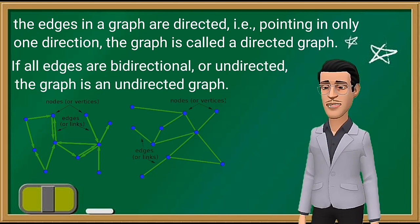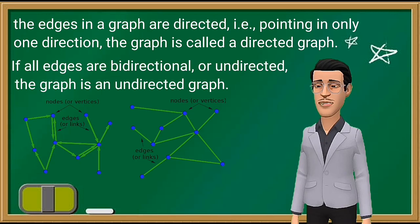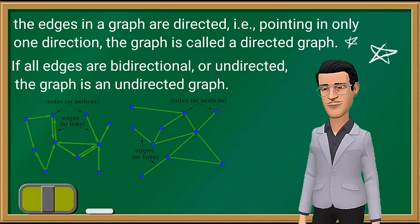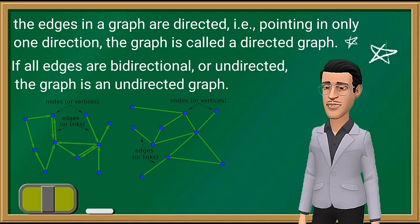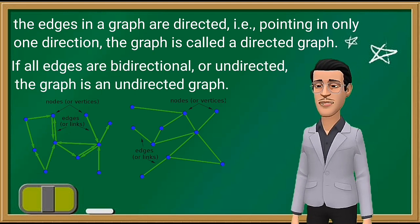When drawing a directed graph, the edges are typically drawn as arrows indicating the direction, as illustrated in the first figure. If all edges are bi-directional or undirected, the graph is an undirected graph, as illustrated by the second figure.